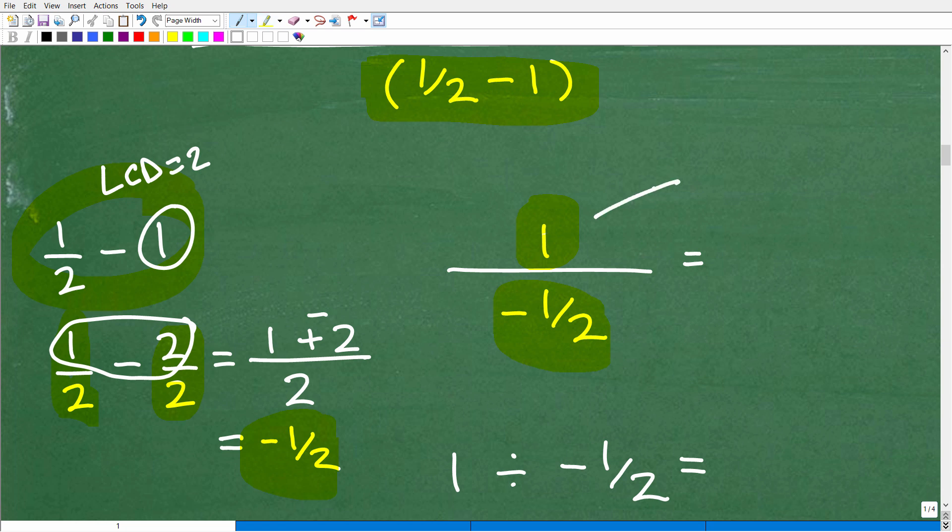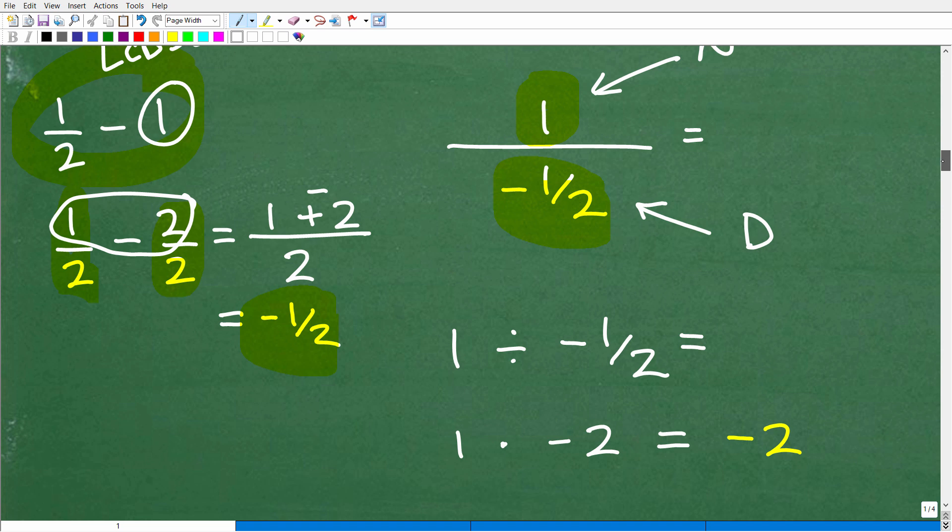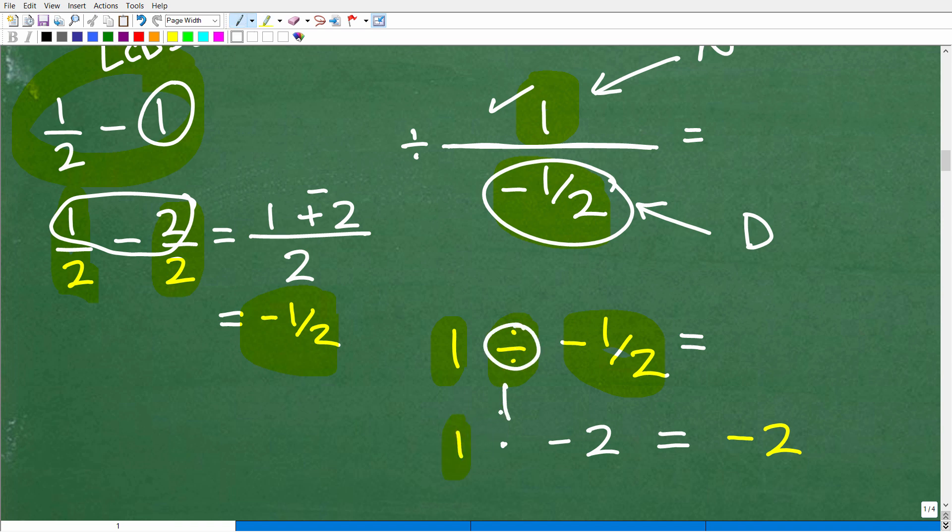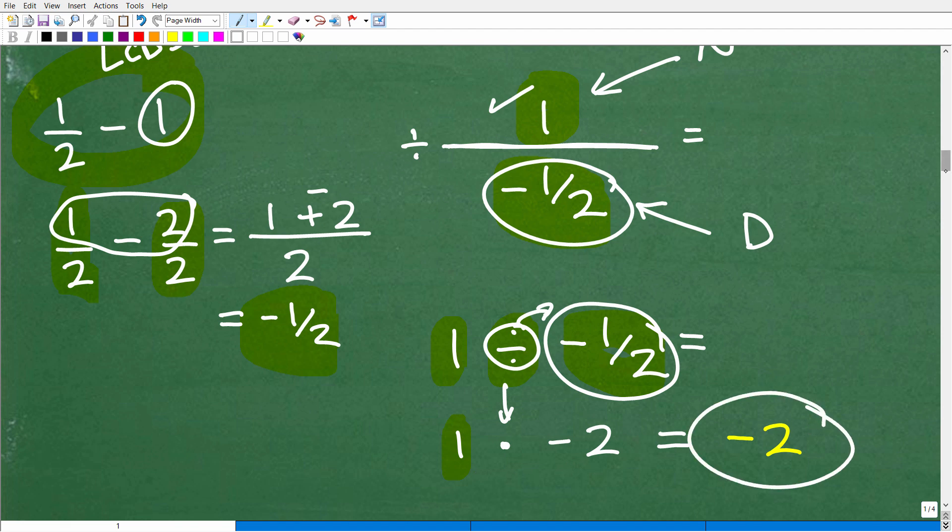All right. So at this point, our numerator is a positive 1. Our denominator is a negative 1/2. And now we can go ahead and deal with this complex fraction. So this is a positive 1 divided by this what this fraction bar says, positive 1 divided by this number. So let's just go ahead and write it out this way. Positive 1 divided by negative 1/2. So again, I'm going to have to know how to deal with fractions. So this is going to be this division is going to turn into multiplication. And I need to flip this fraction to the right. So negative 1/2, when I flip it upside down, it's negative 2, negative 2 over 1, which is the same thing as negative 2. And 1 times negative 2 is a negative 2. So that is the final answer.